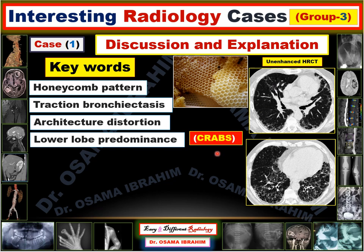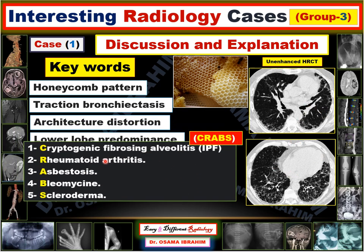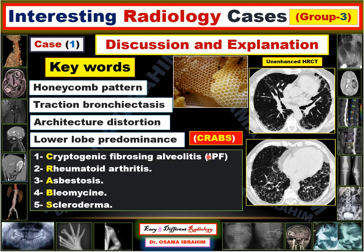The differential diagnosis of lower lobe lung fibrosis can be remembered by the mnemonic KREBS. C is cryptogenic fibrosing alveolitis, or idiopathic pulmonary fibrosis. R is rheumatoid arthritis, which can be excluded with laboratory findings or by detecting arthropathy of the shoulder joint on the film. A is asbestosis, which needs calcified pleural plaques to raise its possibility in the differential.